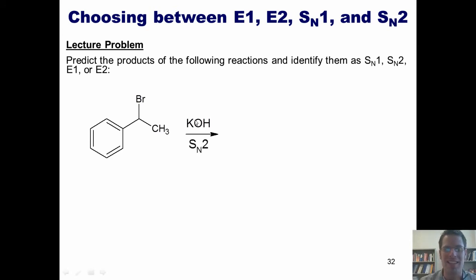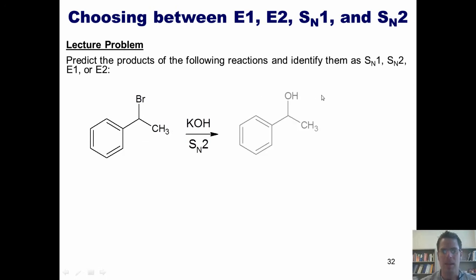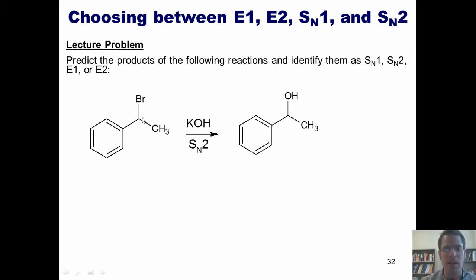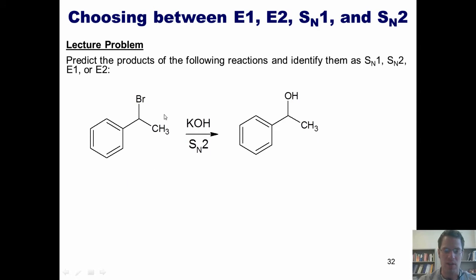The mechanism is that this hydroxide will come in, form a bond with this carbon, kicking off the bromide in a single step, giving me this product. There will be an inversion of stereochemistry. However, because all of these lines are drawn flat in the starting material, it implies I have a racemic mixture at this stereocenter of both enantiomers. Thus, I will get both enantiomers in a 50-50 racemic mixture in my product.